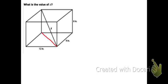If we can find out the length of this red line, then we can find the length of x, because this is a right triangle.